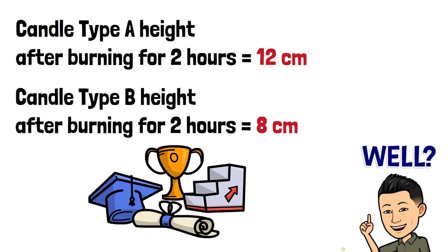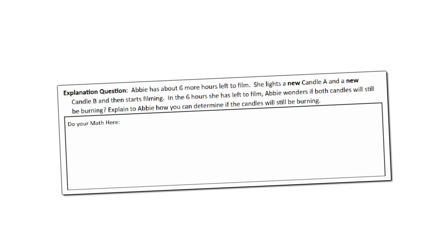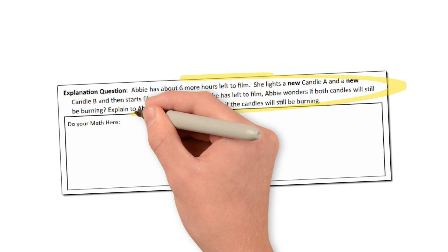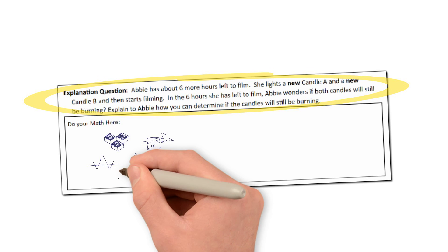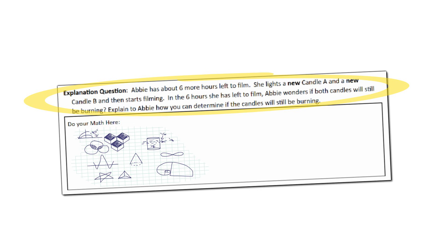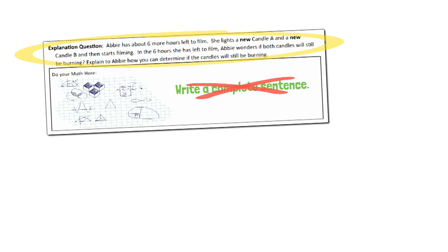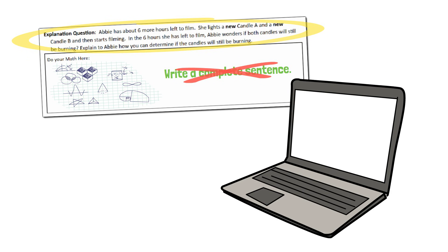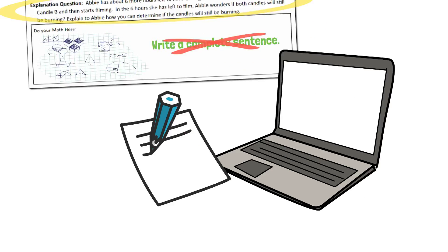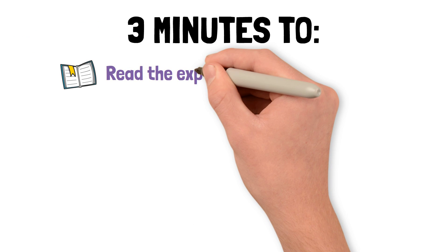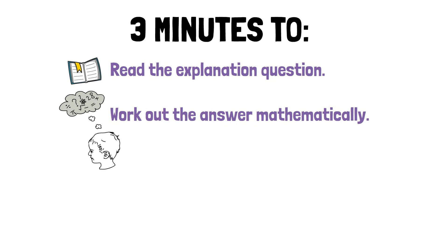Now, you're about ready to start working on the explanation question. In just a moment, I'm going to give you three minutes to read the explanation question and work out the answer using the space in the section labeled Do Math Here. Don't worry about writing sentences yet — this space is just your scratch paper. In fact, on the actual test, you will be using scratch paper to figure out these kinds of calculations. Okay, are you ready? Remember, you're going to read the explanation question and work out the answer mathematically. Okay, you've got three minutes. Go.